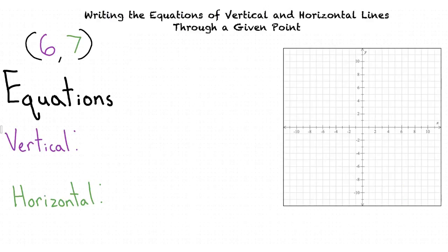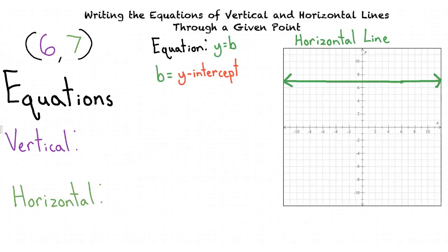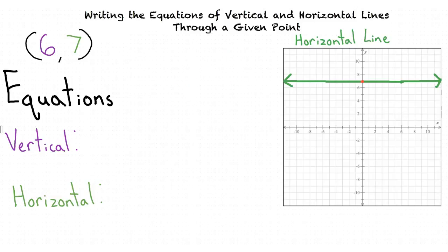A horizontal line is parallel to the x-axis. In the case of our point, our horizontal line would look like this. Its equation is always y equals b, where b is the value of the y-intercept of the line. In the case of this horizontal line, our y-intercept is at 7. This means that b is equal to 7. We also know that b is the value of every point on the line.